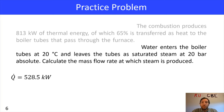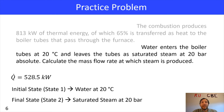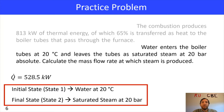For our change in enthalpy, we're going to look at what is the change in energy state from state one to state two. We see that water enters the boiler tubes at 20 degrees Celsius — that's our initial state, state one. Reading further, state two is going to be saturated steam at 20 bar. Those two pieces of information are going to help us with our enthalpy. Right now I don't have actual enthalpy numbers — we just know we're going from state one to state two.